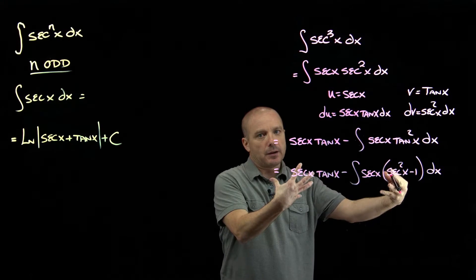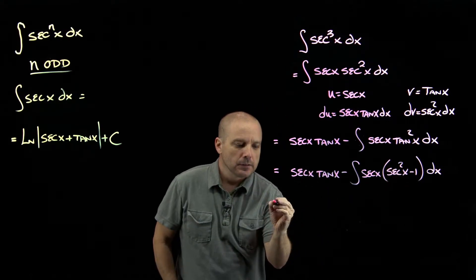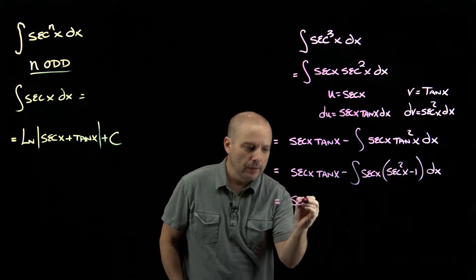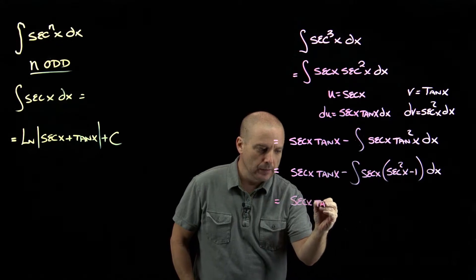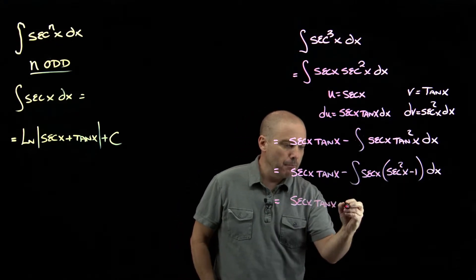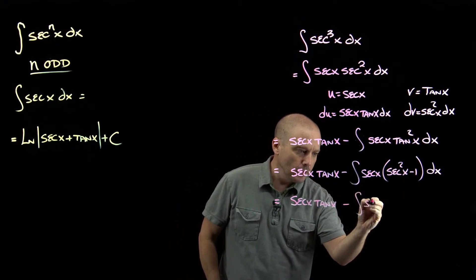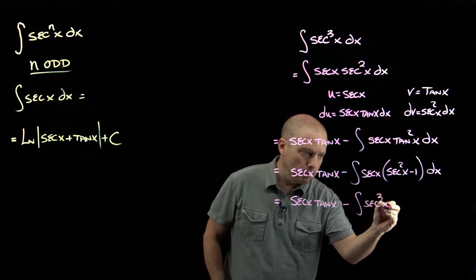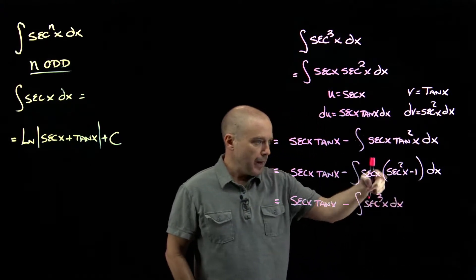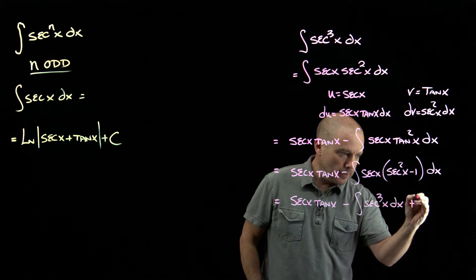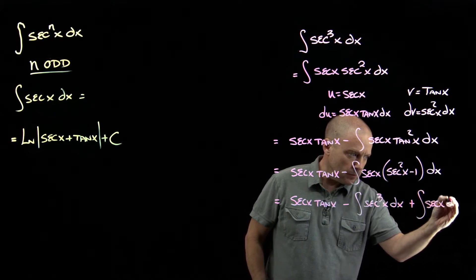Then I'm going to break that apart into two integrals, so I have secant x tangent x, and then minus an integral of secant cubed, then minus a minus plus an integral of secant.